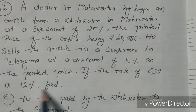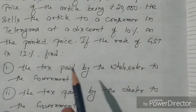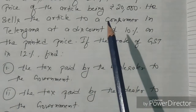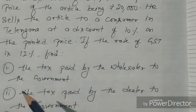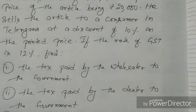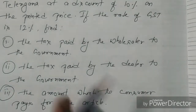The rate of GST is 12%. We need to find: first, the tax paid by the wholesaler to the government — so the wholesaler will pay the output tax, which is the amount collected from the dealer. Second, the tax paid by the dealer to the government — the dealer will pay tax on his profit of 15%. Then we'll calculate the consumer's price. Let's jump to the solution.